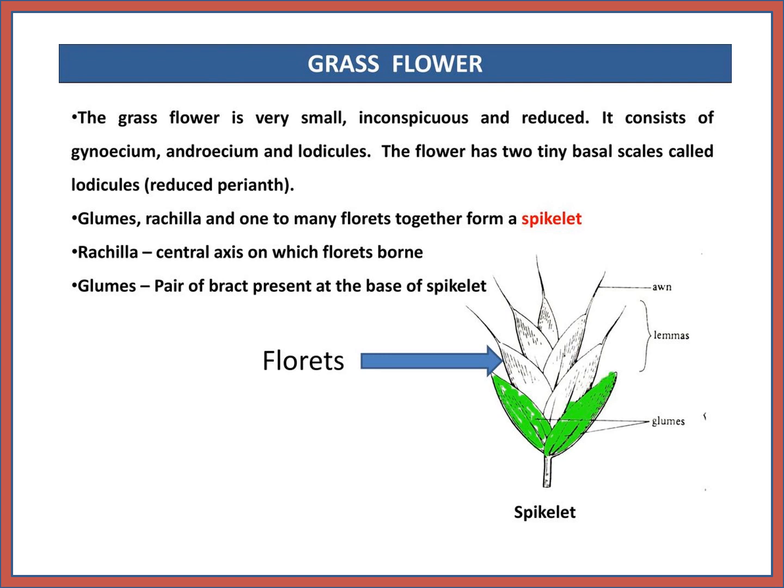The grass flower is very small, inconspicuous and reduced. It consists of gynoecium, androecium, and lodicules. The flower has two tiny basal scales called lodicules, which are the reduced perianth — perianth meaning fused petals and sepals. Glumes, rachilla, and one to many florets together form a spikelet. Rachilla is the central axis on which florets are borne. Glumes are a pair of bracts present at the base of the spikelet.